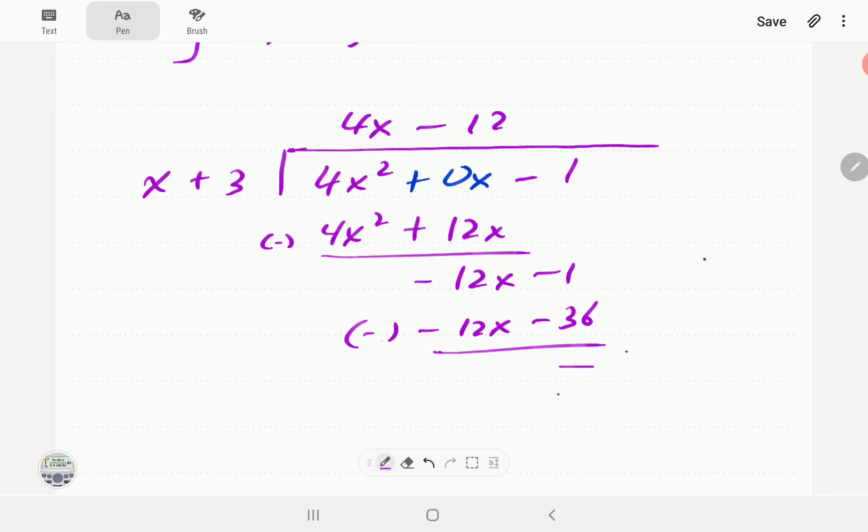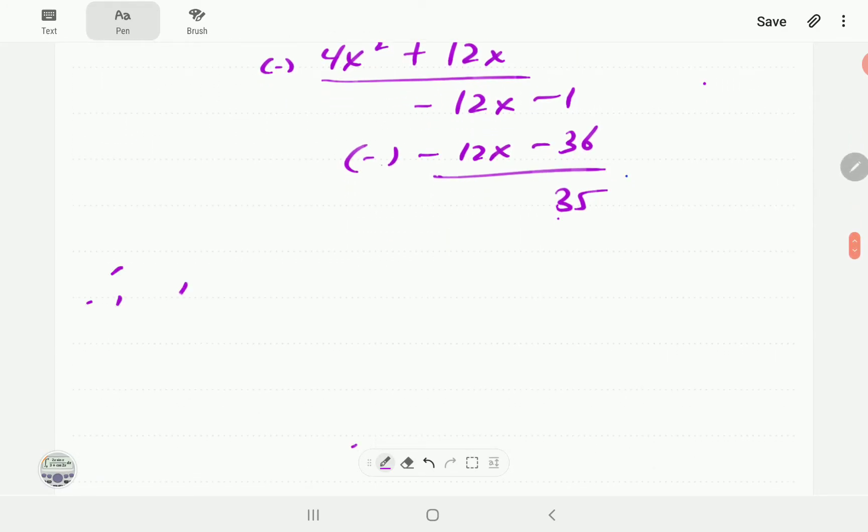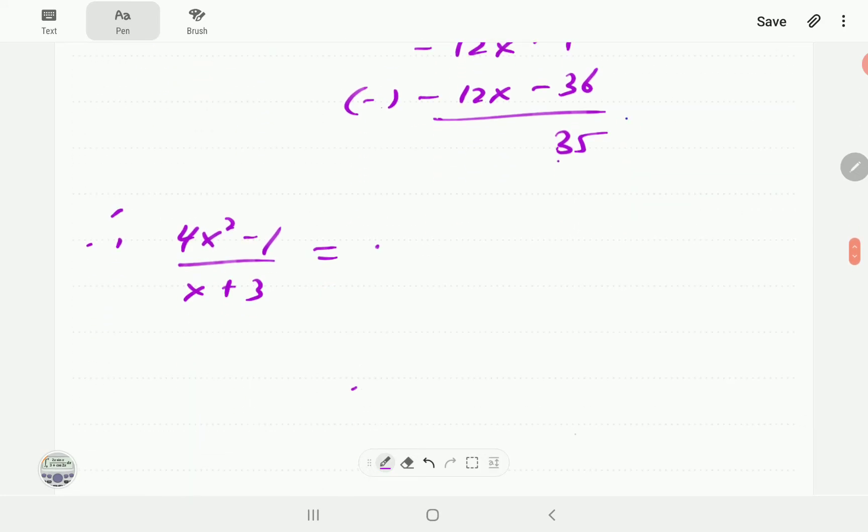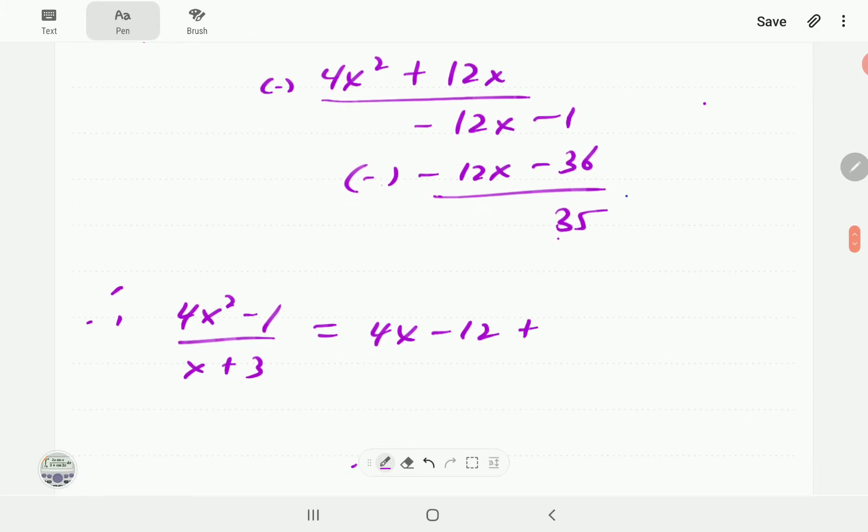Then if we subtract again the 12x terms cancel out. This one is going to give us 35. So what this calculation is telling us is that 4x² - 1 over x + 3 is equal to 4x - 12, that is the quotient. Then the remainder is 35 so 35 over x + 3.